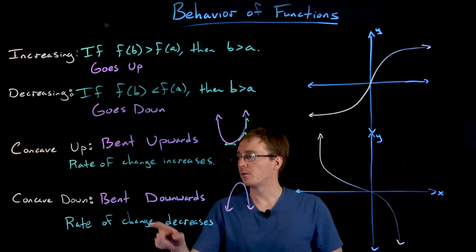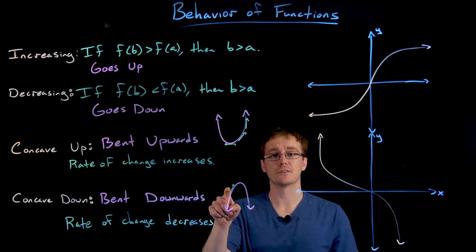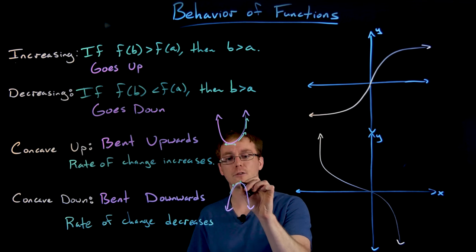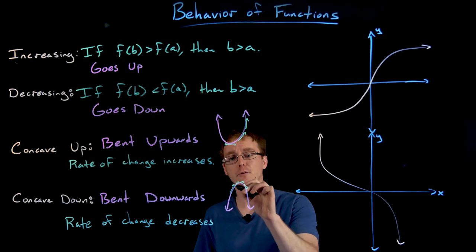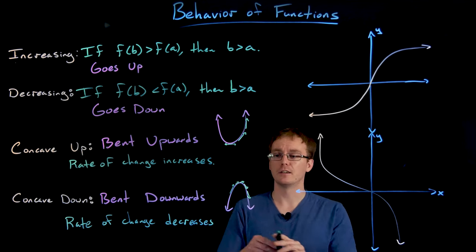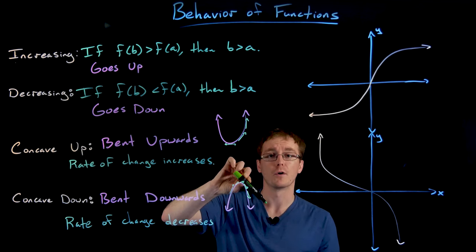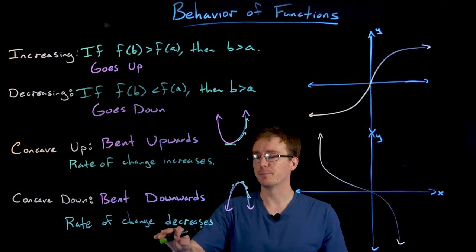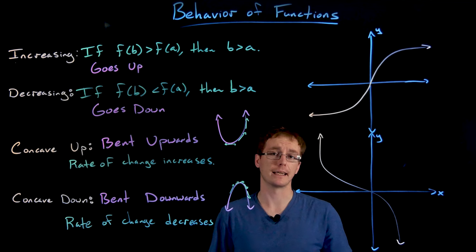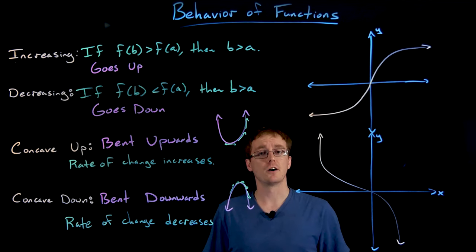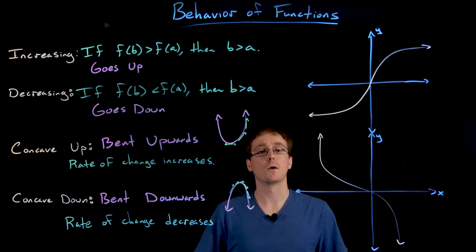The same idea applies to concave down. Where a function is increasing it has a positive rate of change, but as we move through a concave down interval the function stops increasing and starts decreasing — that rate of change is decreasing, as shown by the slopes of the approximating lines getting more and more negative. That's exactly what it means to be concave down: its slope decreases. For now, just think of it as bending upwards or bending downwards.